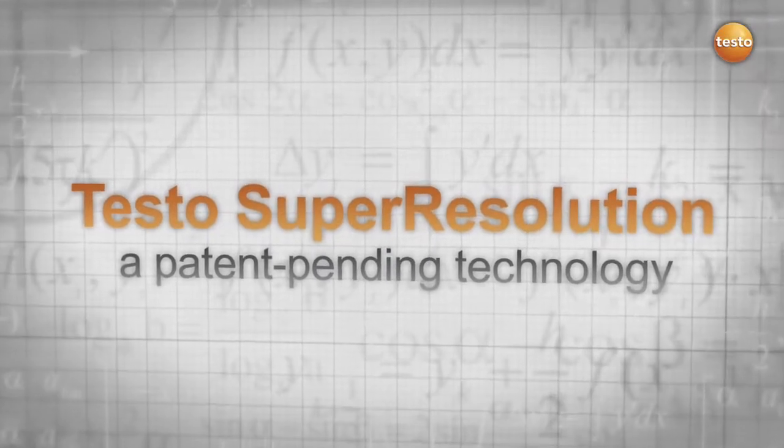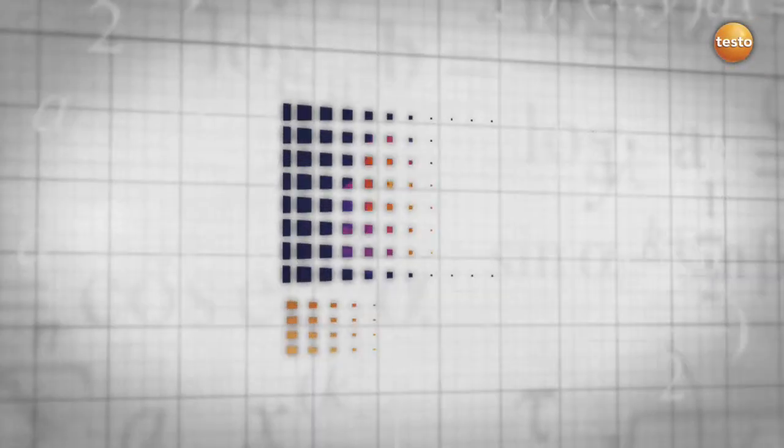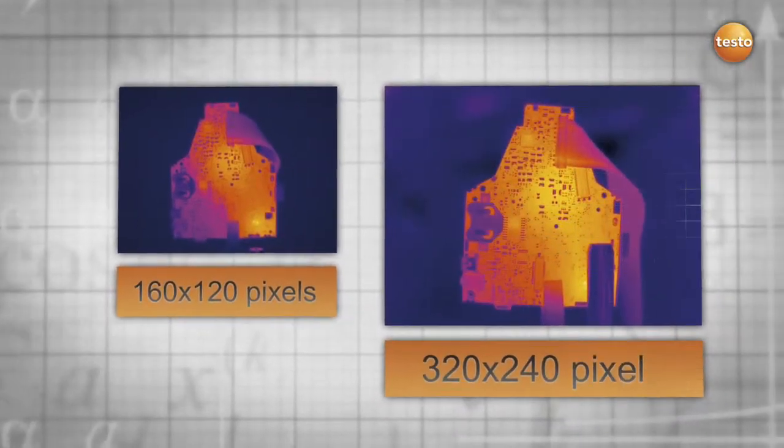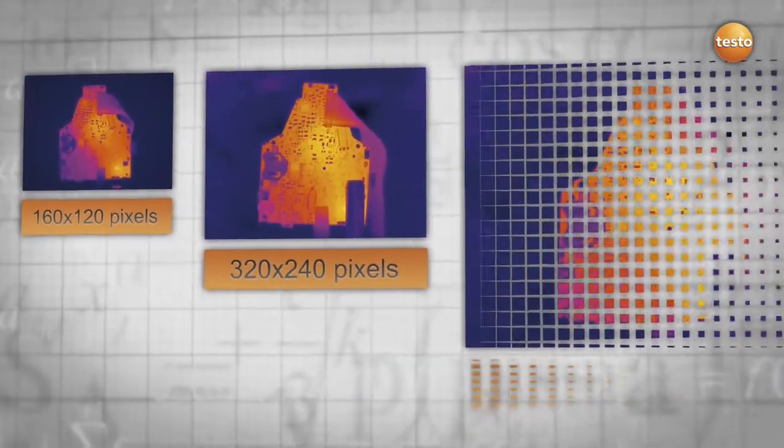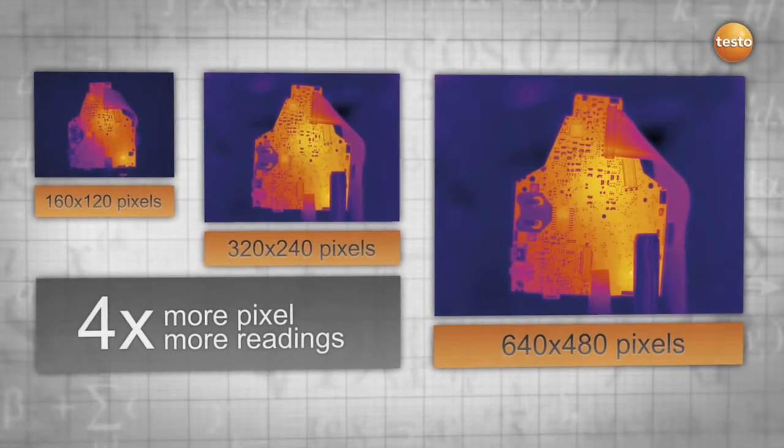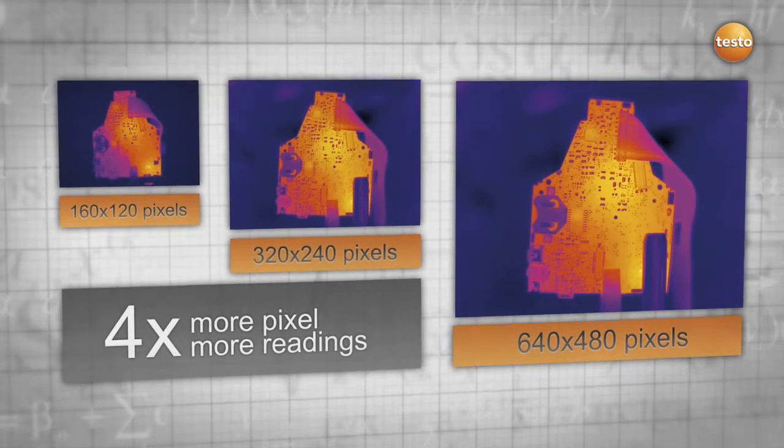The patent-pending Testo Super Resolution technology provides you with four times more readings, which results in a much more detailed thermal image. It makes the image quality of your Testo thermal imager a cut above the rest with four times as many pixels and a more detailed picture.